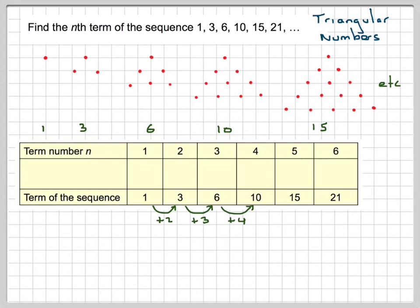From 6 to 10 you add 4, from 10 to 15 you add 5, and from 15 to 21 you add 6. This doesn't really help us, but if we look at the differences of differences, we can see that they're adding 1 each time.